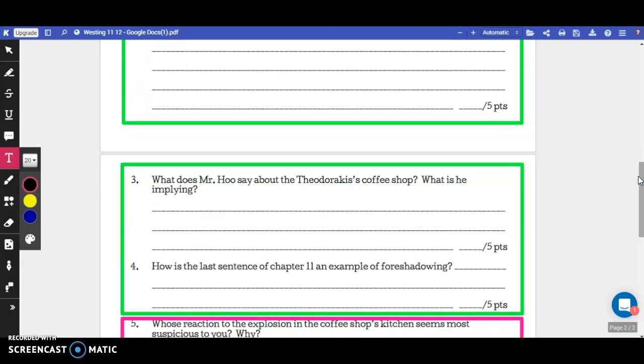For question 3, it asks, what does Mr. Hoo say about the Theodorakis coffee shop? And what is he implying?